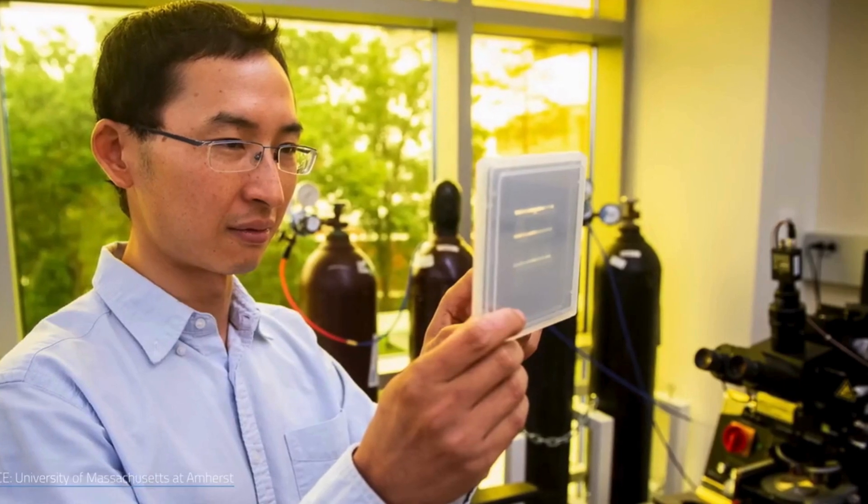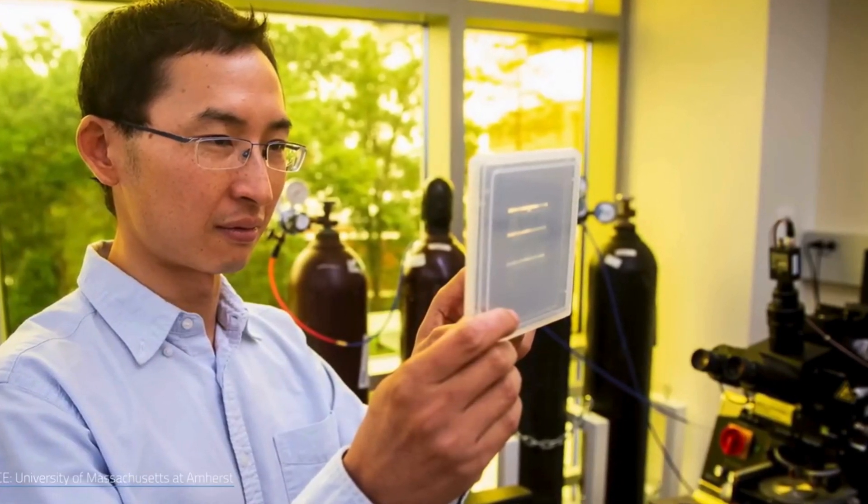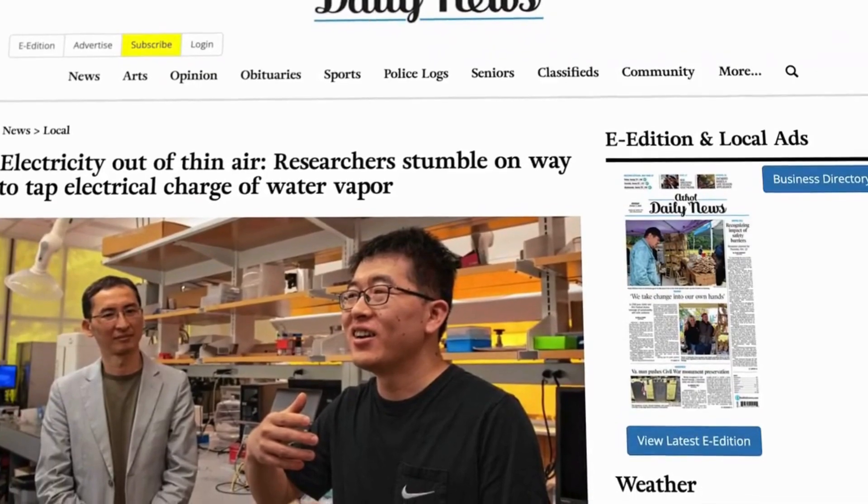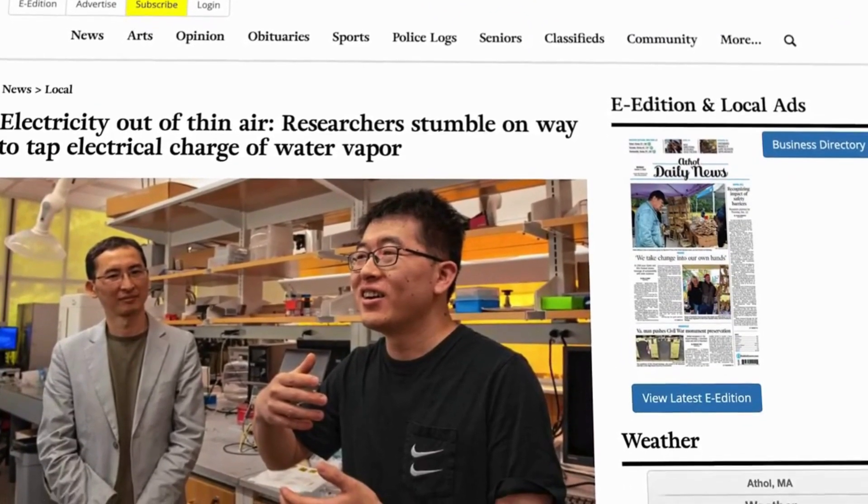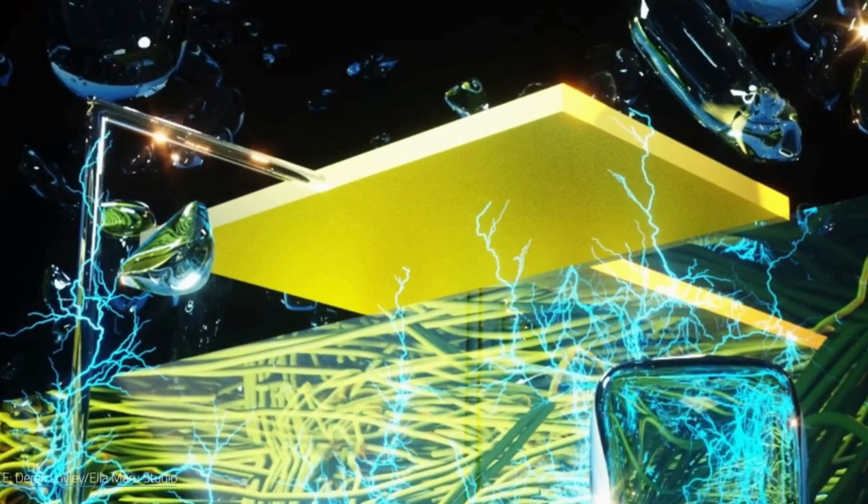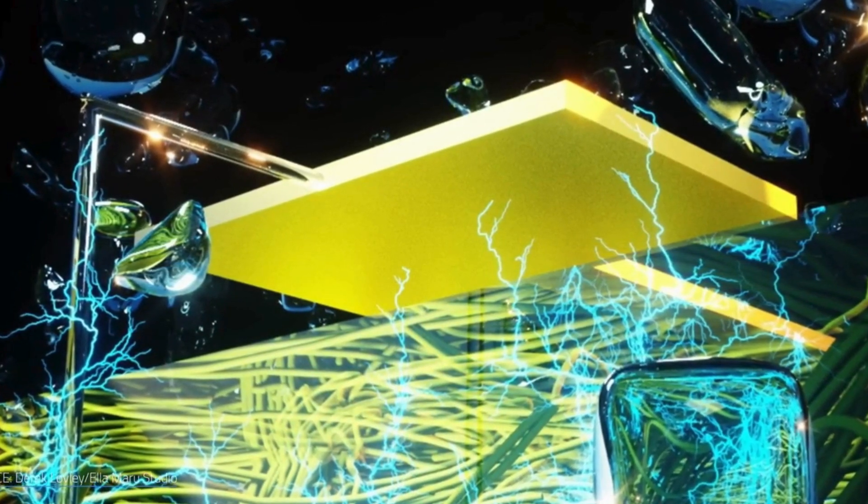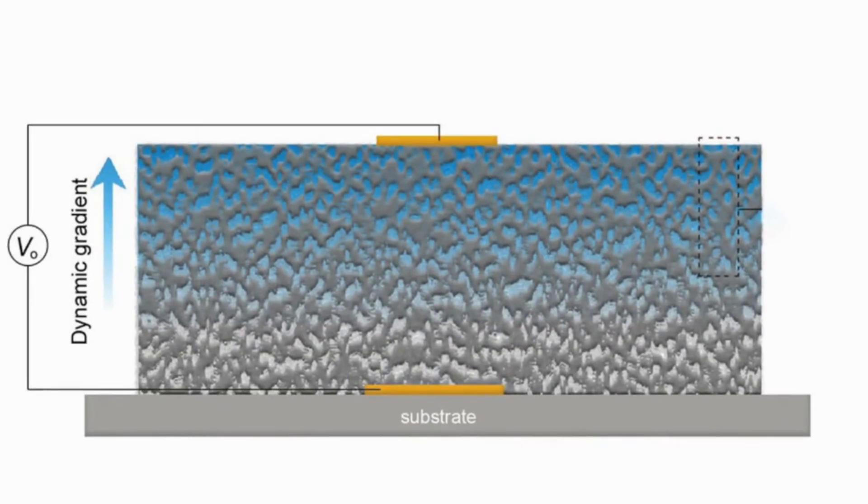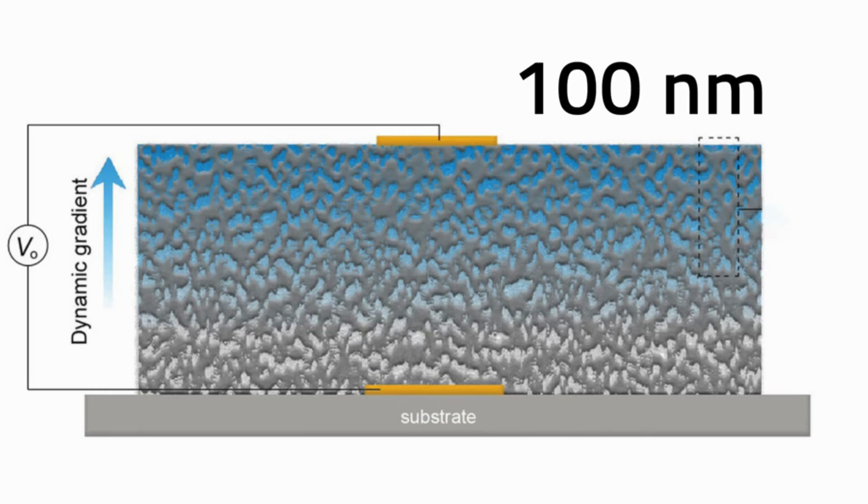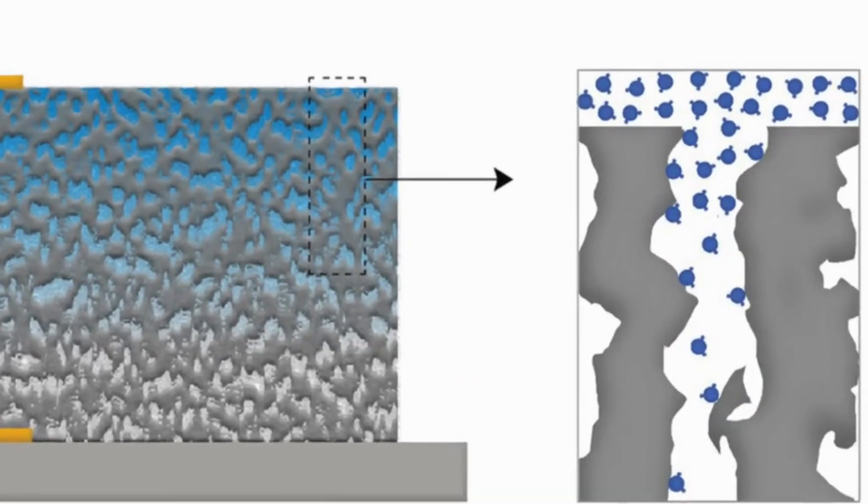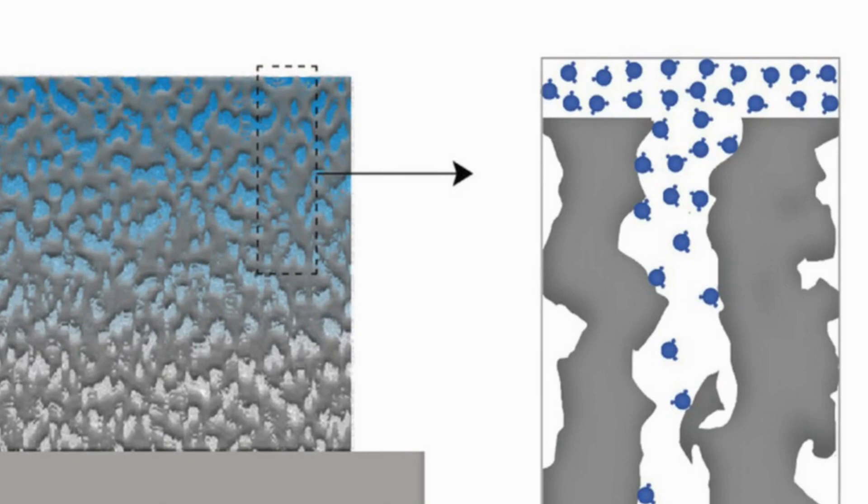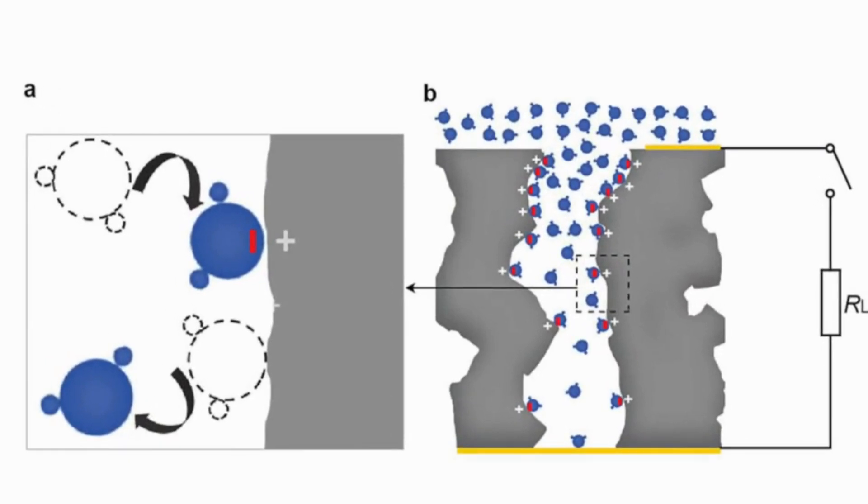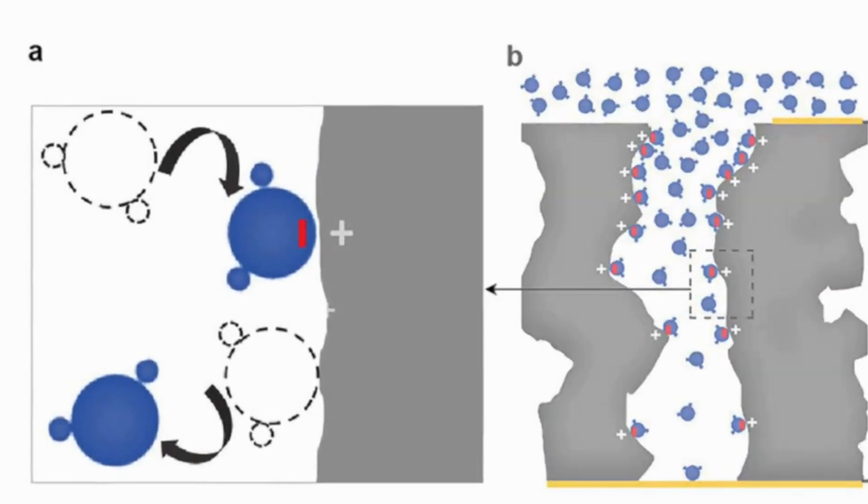This unexpected discovery by Professor Yao and his team, echoing the serendipitous breakthroughs that dot the history of science, hints at the potential to convert atmospheric moisture into electricity. Despite the complexities and mysteries surrounding the process, the team is pioneering research to decode how humidity can be used as an energy source. They are delving into the unknown, piecing together the intricate science that could make tapping into the humidity for electricity a reality.